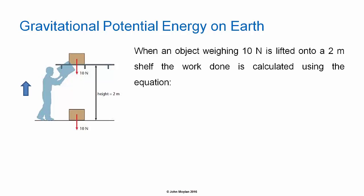Gravitational Potential Energy on Earth. When an object weighing 10 newtons is lifted onto a 2 meter high shelf, the work done is calculated using the equation W = mgh, where m is the mass of the object in kilograms, g is acceleration due to gravity in meters per second squared, and h is the vertical distance through which the object is moved. This equals F subscript g, the force due to gravity on the object or the weight of the object, multiplied by d, the vertical distance through which the object is moved in meters.